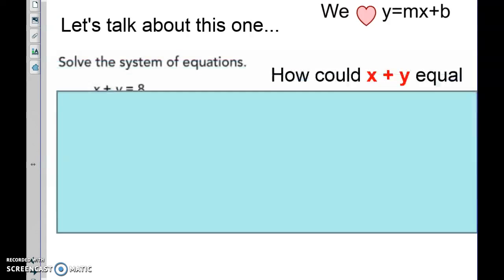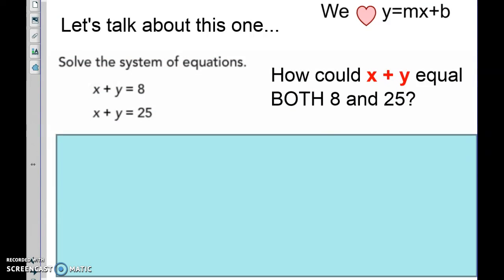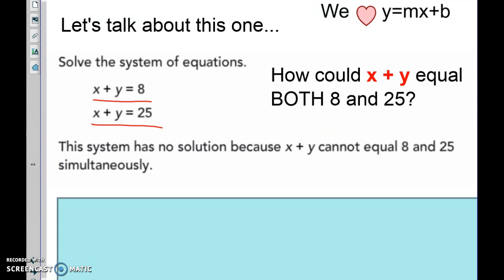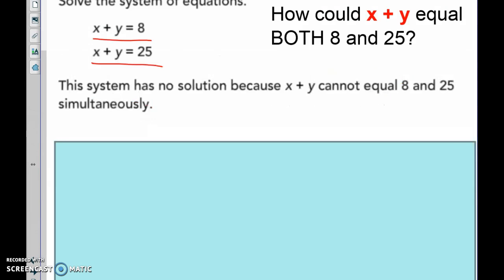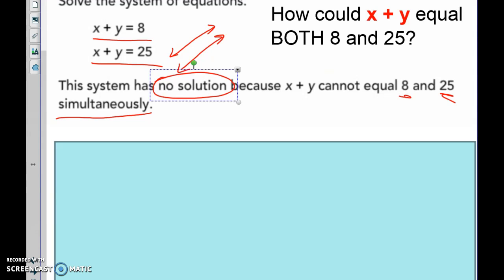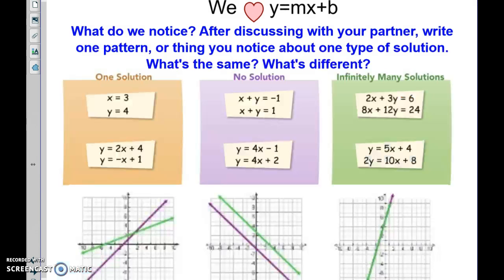How could x plus y equal 8 and x plus y also equal 25? Without even doing math, by just inspecting — x plus y cannot equal 8 and 25 at the same time, or simultaneously. So these are parallel lines with no solution. On your homework you'll need to show why: no solution because they are parallel lines that will never cross.